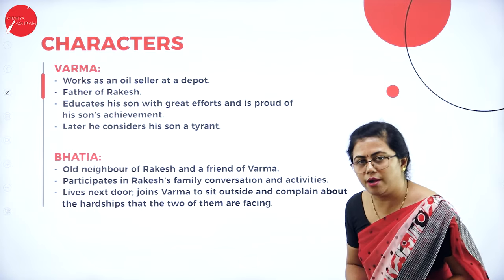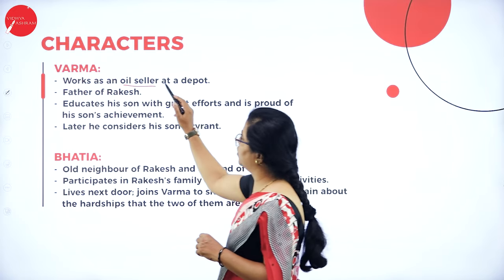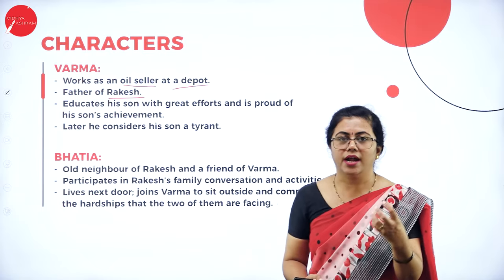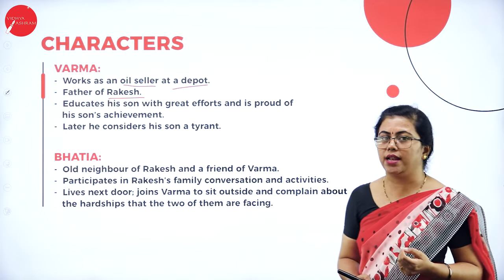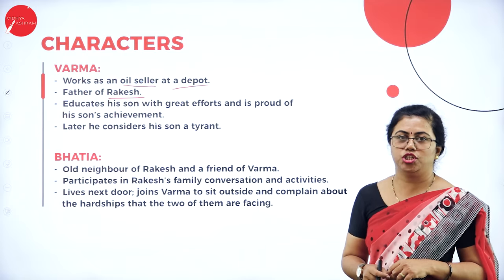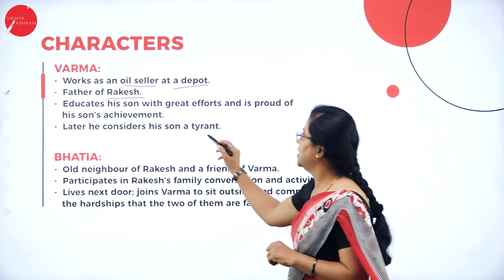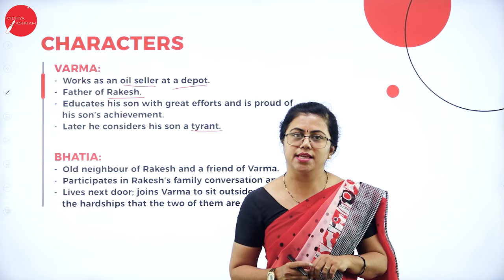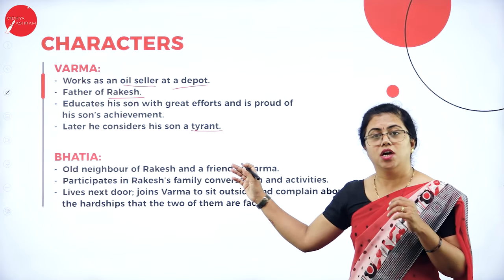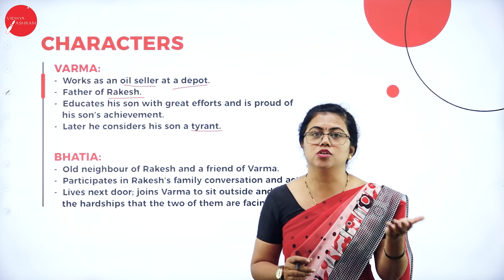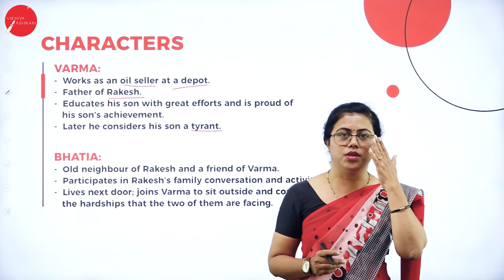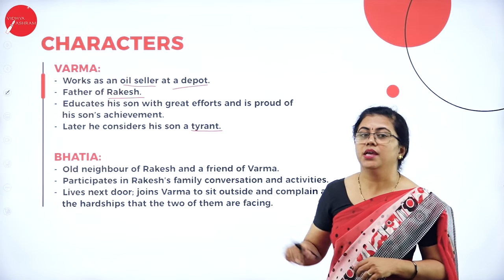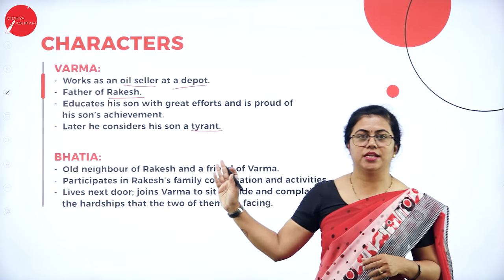Next is Mr. Varma. He was an oil seller at a depot and the father of Rakesh. He put in hard efforts to educate his son and was proud of his son's achievement. Later, he comes to consider his son as a tyrant — a person who behaves like a dictator — because his son supervises his complete diet when his health deteriorates. Mr. Varma is also a major character in the story.